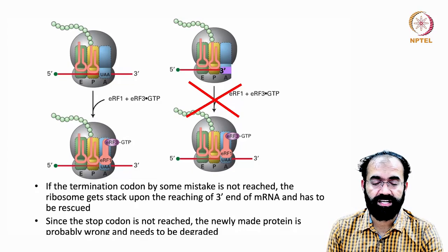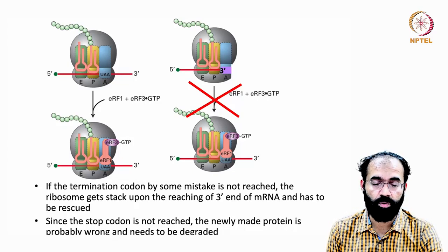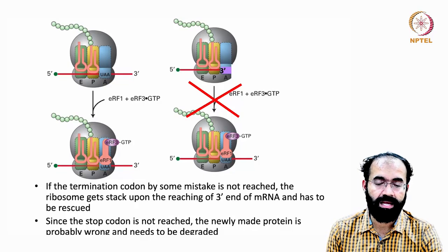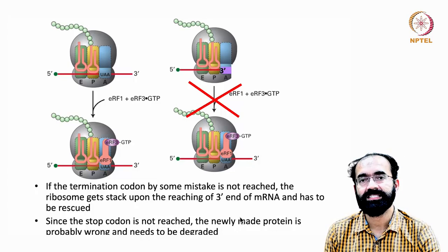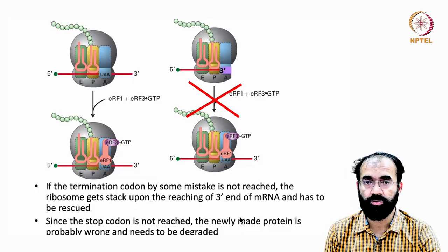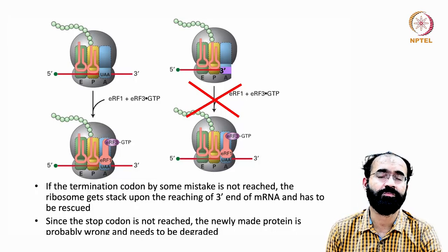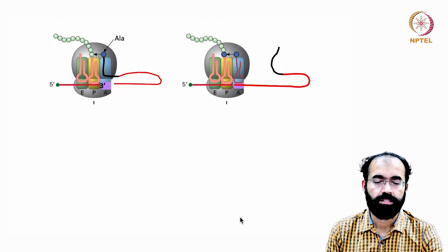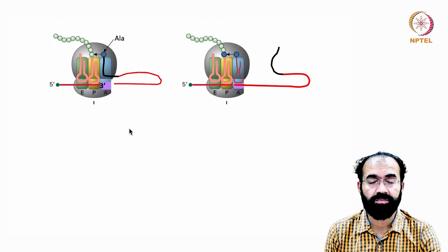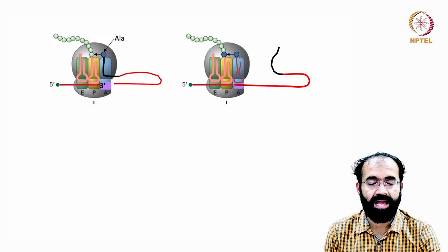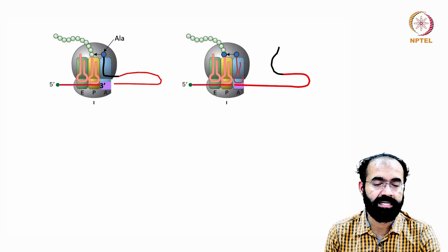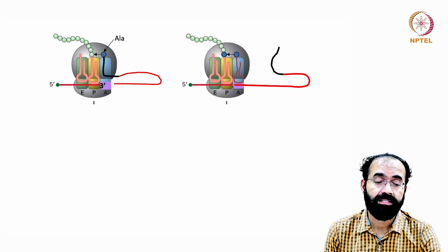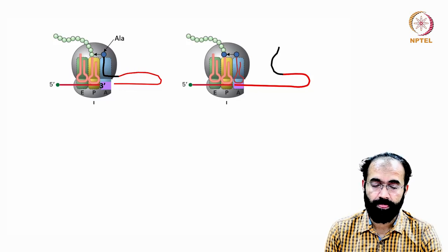Since the stop codon was never reached and the ribosome reached the very tip of the mRNA, the newly made protein is likely wrong and needs to be degraded. Two things must now be done: first, rescue the ribosome so it can be used for another round of translation from a different mRNA; second, mark this aberrant protein for degradation. This is where tmRNA becomes important.